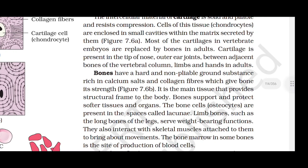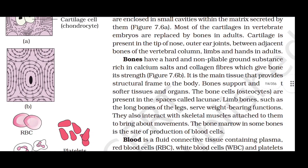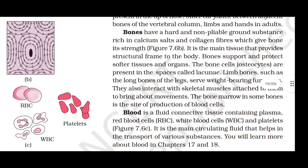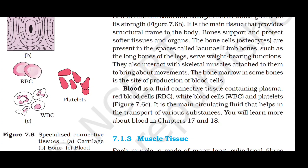Bones have a hard, non-pliable ground substance rich in calcium salts and collagen fibers, providing structural frame to the body. Bone cells, osteocytes, are present in spaces called lacunae. Limb bones serve weight-bearing functions and interact with skeletal muscles for movement. Bone marrow in some bones is the site of production of blood cells. Blood is a fluid connective tissue containing plasma, red blood cells, white blood cells and platelets — the main circulating fluid for transport of various substances.